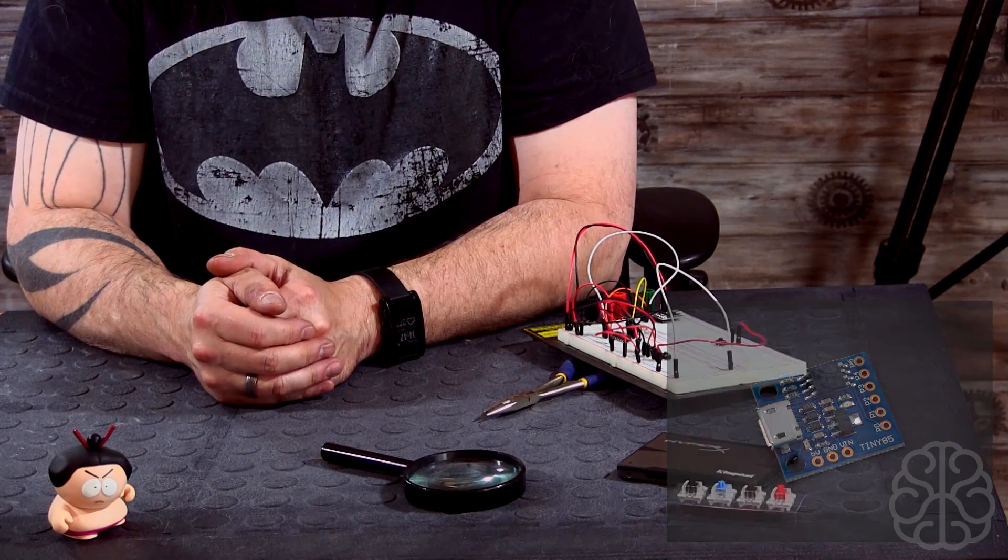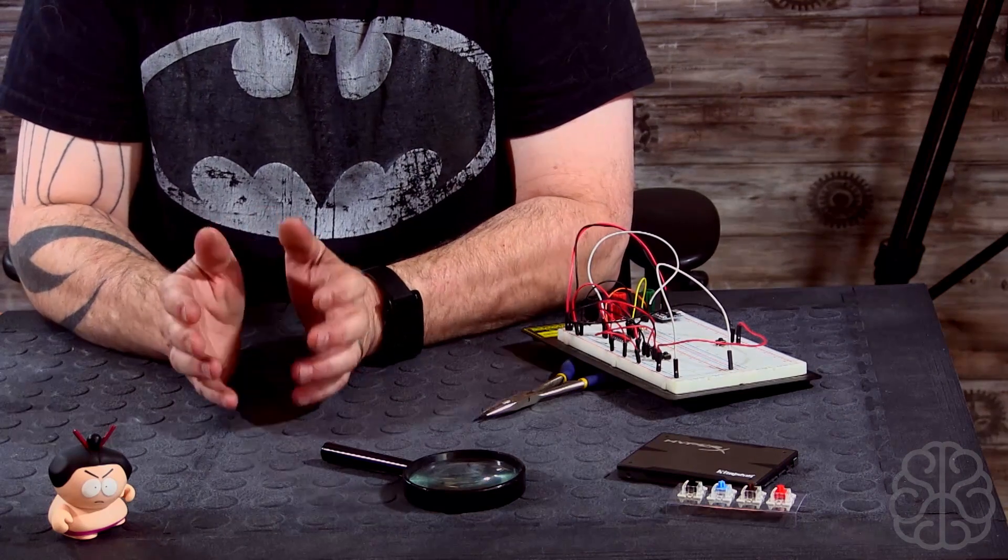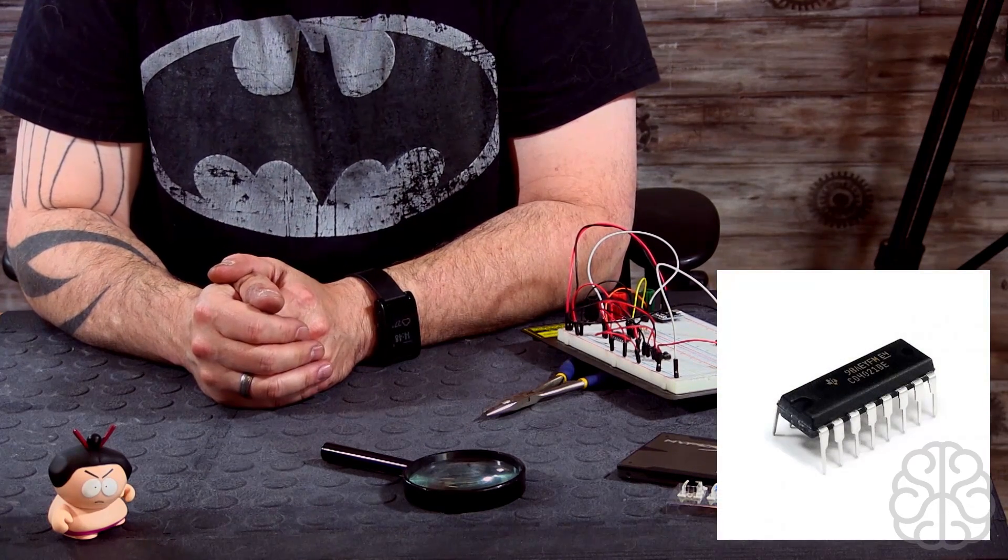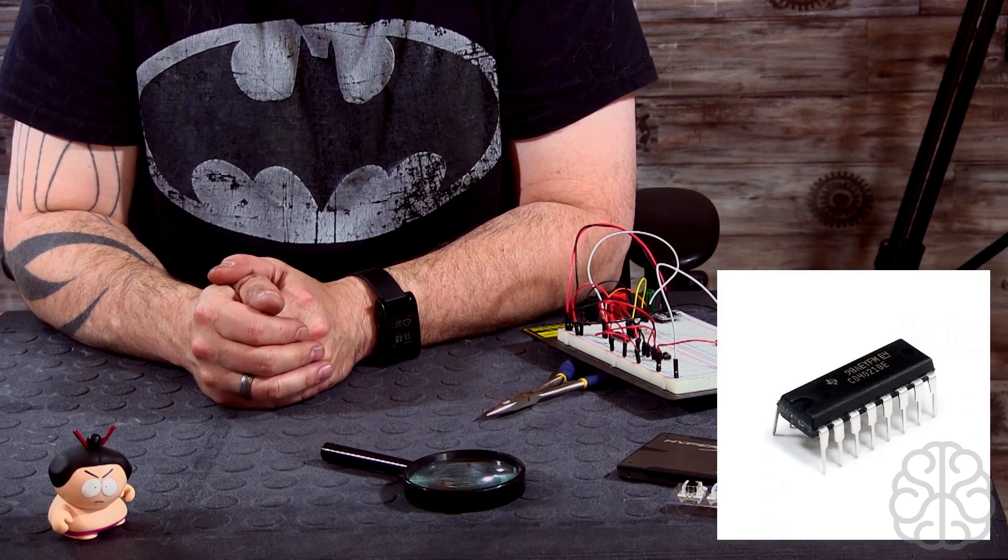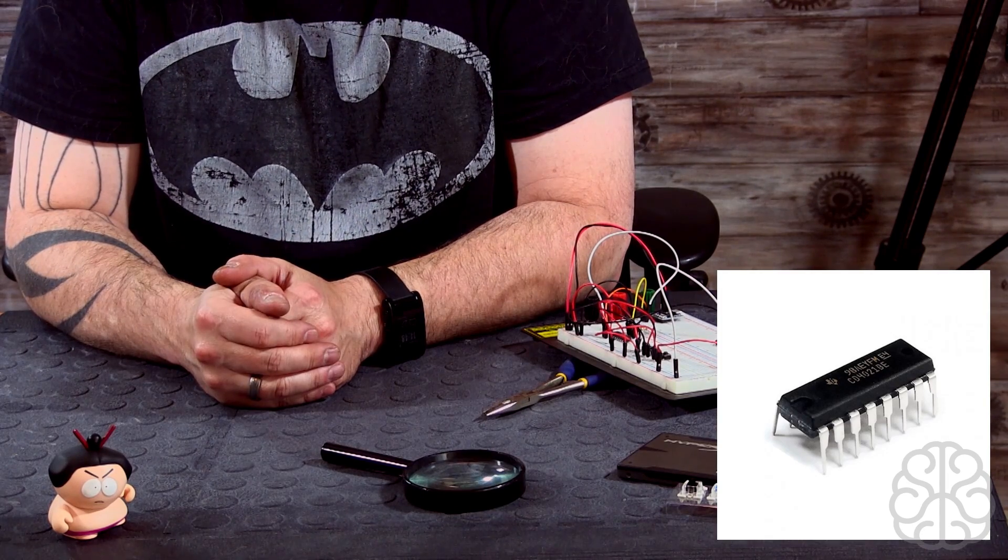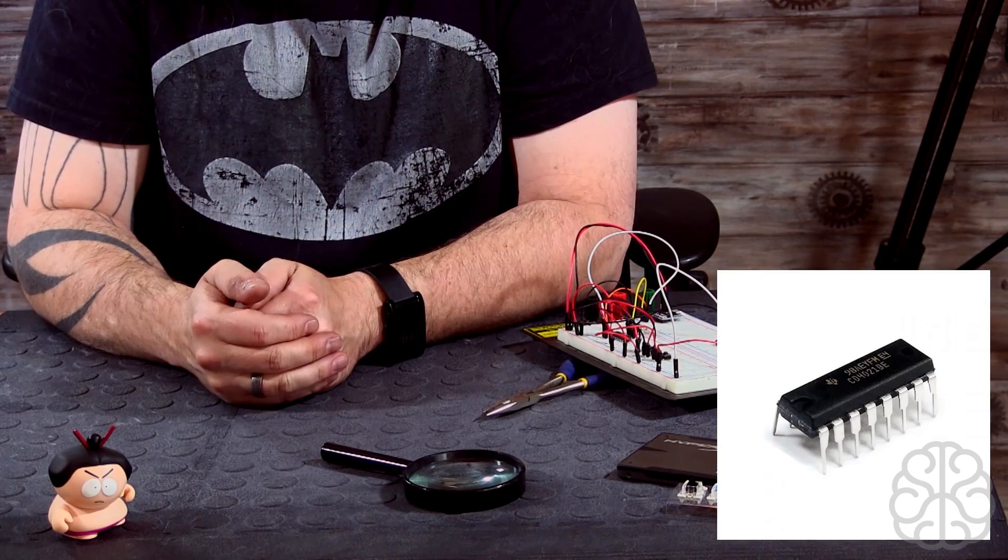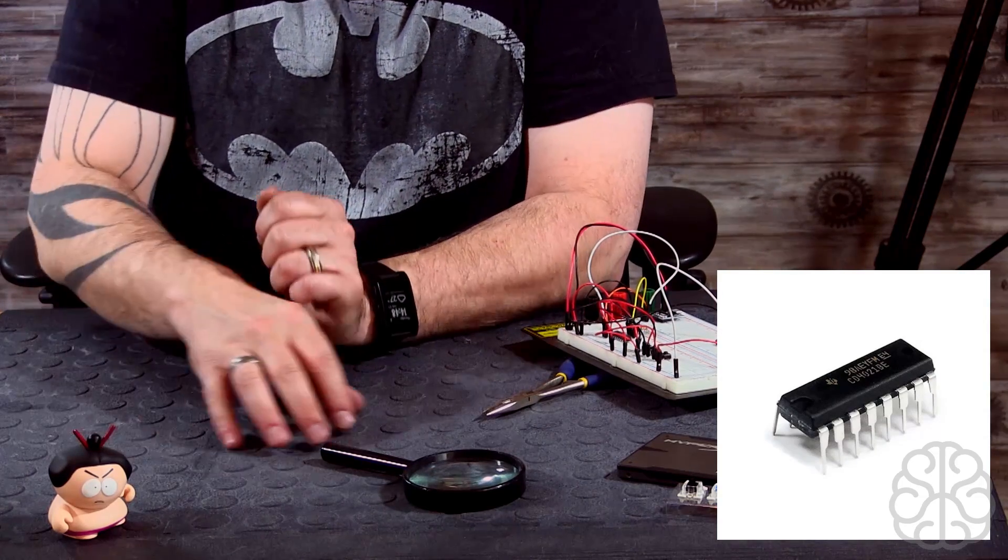I'm gonna show you a way to add up to eight inputs by using a simple chip, the CD4021. It's basically a shift register, but instead of shifting out like you may have seen before for lighting up LEDs, this one shifts in data to the Arduino so it can read up to eight digital inputs.